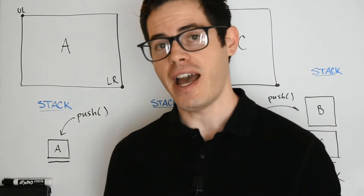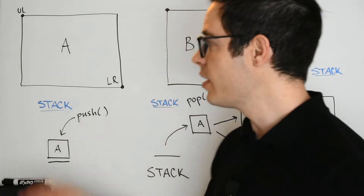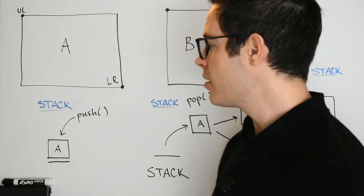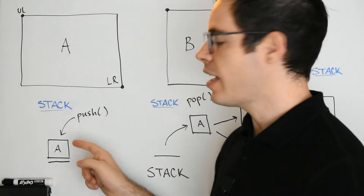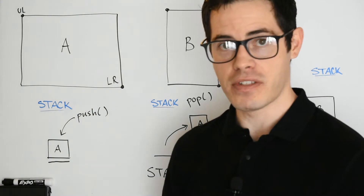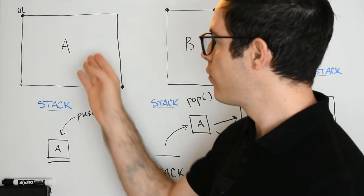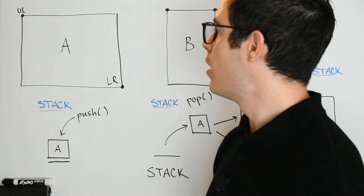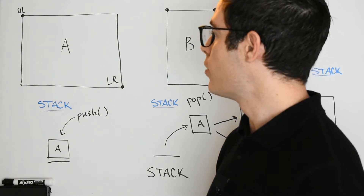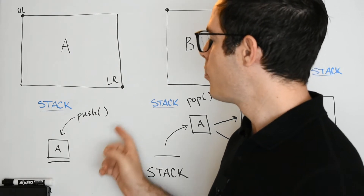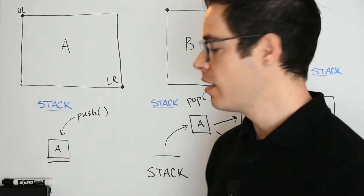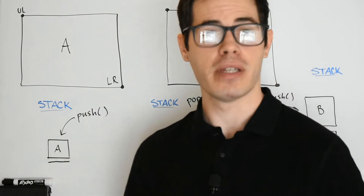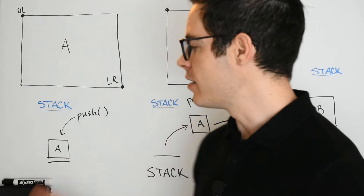So if we have a stack to hold these floor items, basically what we're going to do is push A on top of the stack. As we start off with our first room or floor, we're pushing that floor — call it A — on top of the stack. Now we have a stack with one item in it, and that's A.